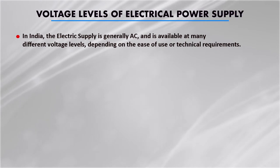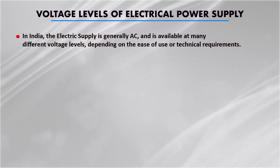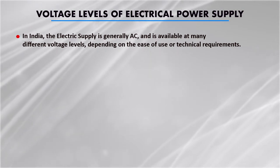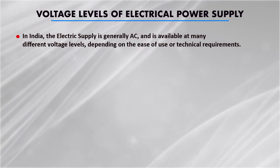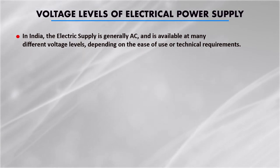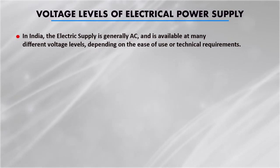In India the electrical supply is generally AC, or alternating current, which is available at many different voltage levels depending upon the ease of use or technical requirements. You can use both AC power or DC, but generally AC is more popular. The lowest voltage level at which the retail consumer gets electrical power is 230 volt, and this is the single phase two wire supply.